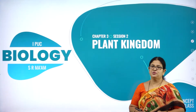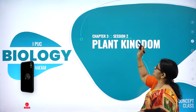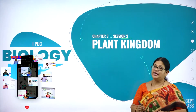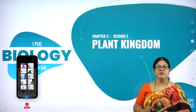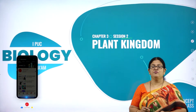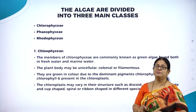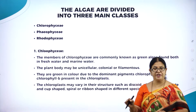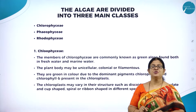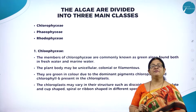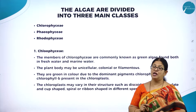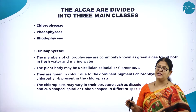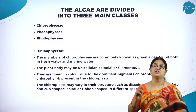Hello dear students, welcome back to session 2 of this interesting chapter called Plant Kingdom. Hope you remember in the last session we started off with the phylogenetic system of classification, which classified the whole plant kingdom into 5 groups: algae, bryophytes, pteridophytes, gymnosperms, and angiosperms.